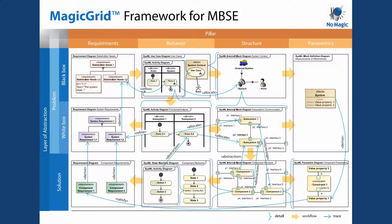For starters, I do like the way they've defined the layers of abstraction on the left: we have the problem space at the top, the black box, white box, and the solution at the bottom, which could be your physical architecture, though I would argue that the logical architecture could also be considered part of that.